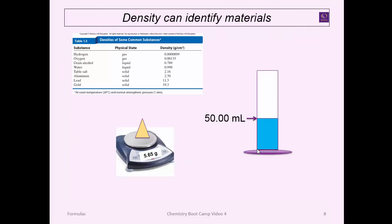So how do you identify a material? We're going to take this material and figure out how dense it is. We need the mass, so we put it on a scale and see it's 5.65 grams. How do you find the volume? If it's a regular shape you can measure length, width, and height and do the geometric calculation. For irregular shaped objects, a fallback trick is to place it in water and see how much water it displaces to figure out its volume.